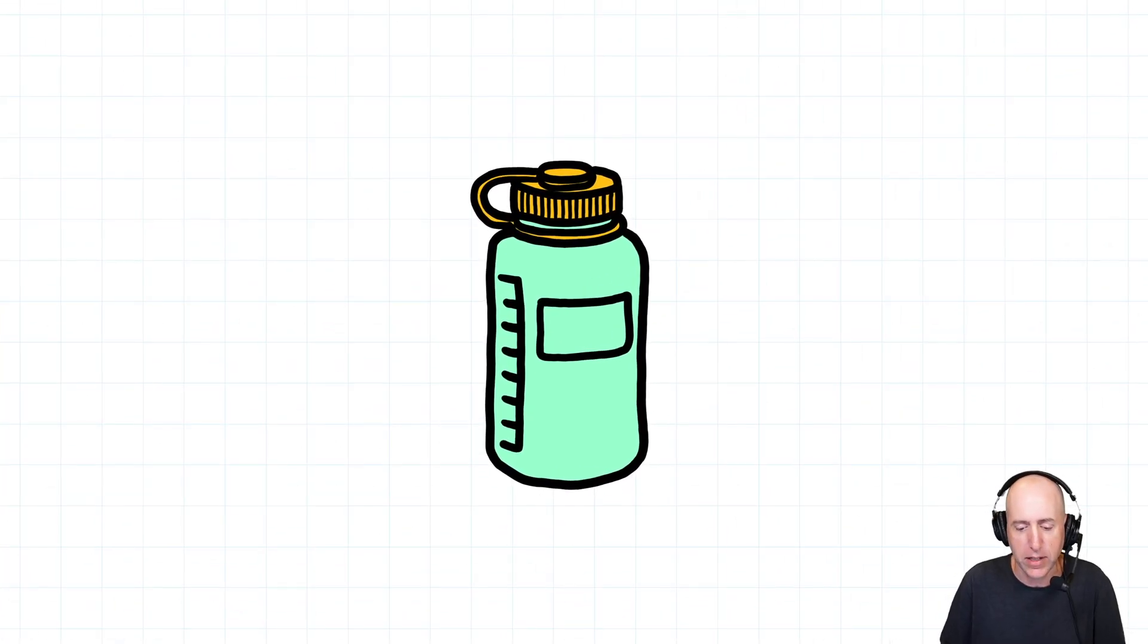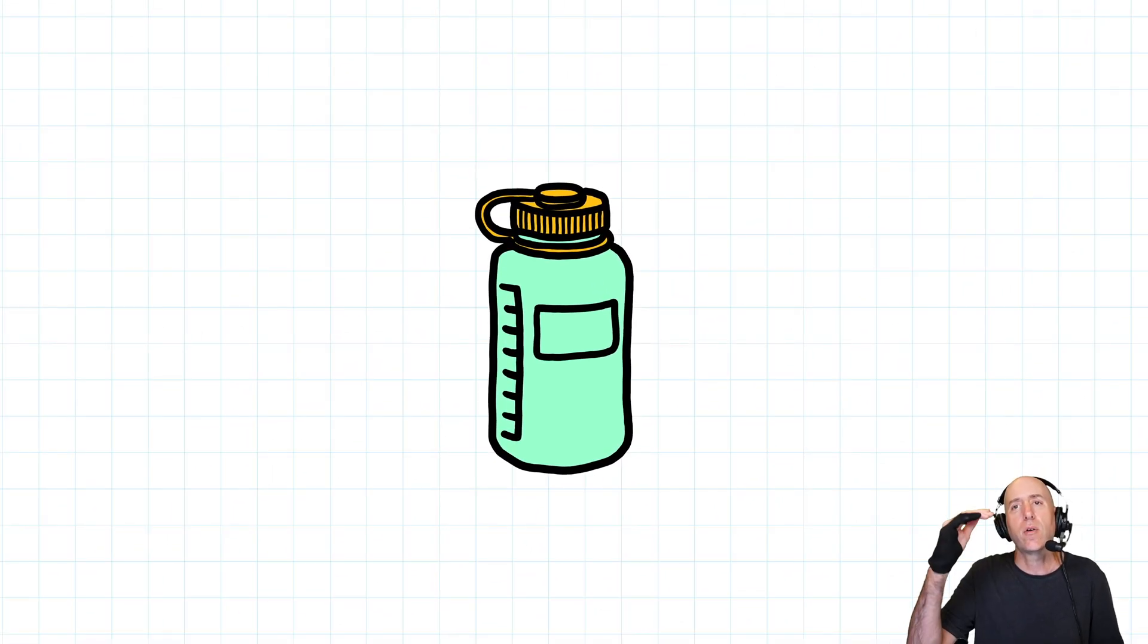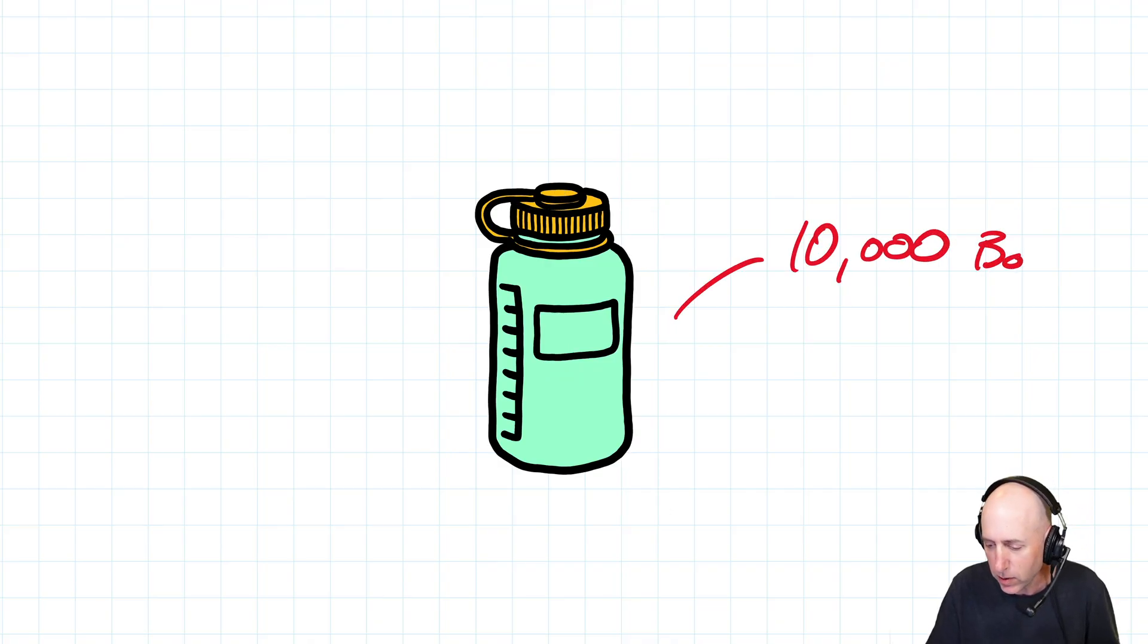And here's the idea behind process costing. They're not making the bottles one at a time. They're making them hundreds or even thousands of bottles at a time. So let's say in a given period, this company makes 10,000 bottles. They make 10,000 units in this hypothetical example.